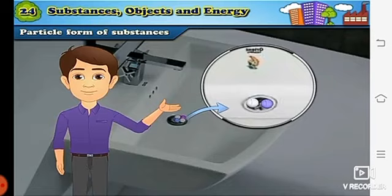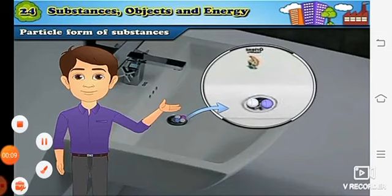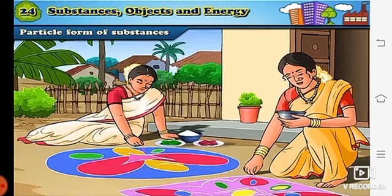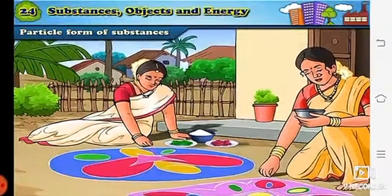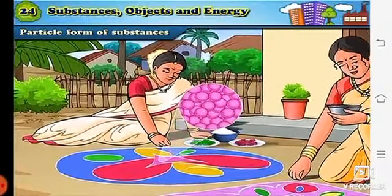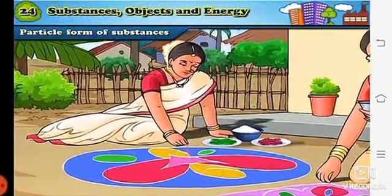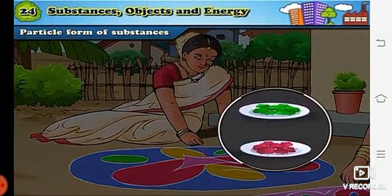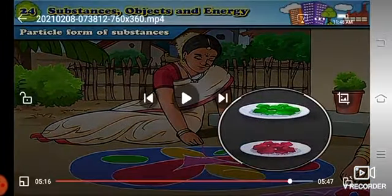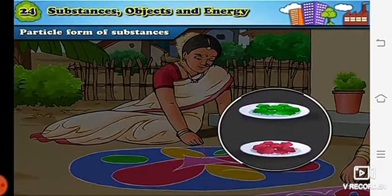Did you understand? So from these two examples we have learnt that gases are also made up of tiny particles. Also, the size of particles of rangoli is fine, like a flower. Rangoli colors are also available in the forms of grains.